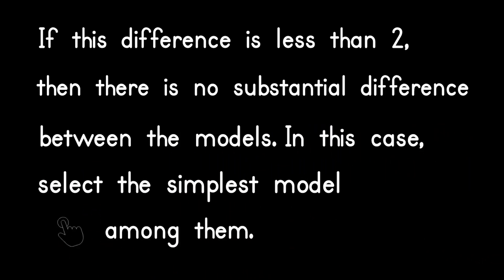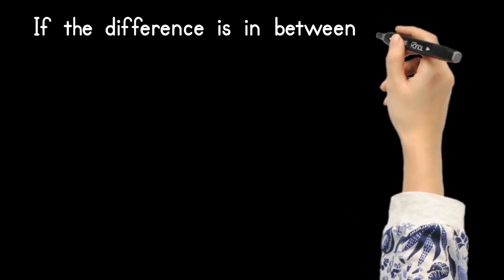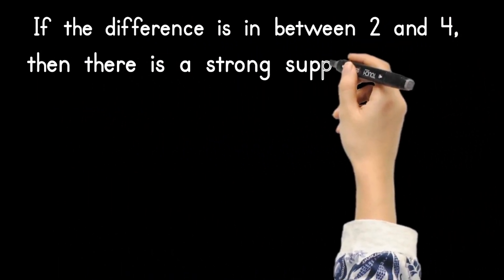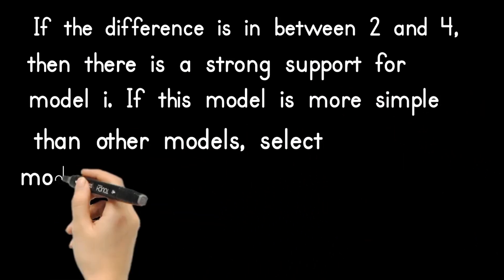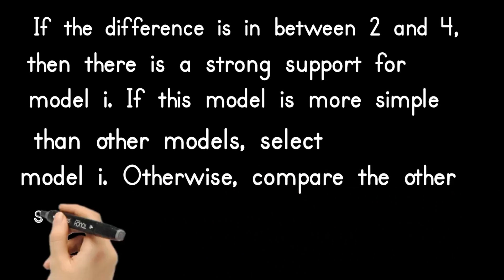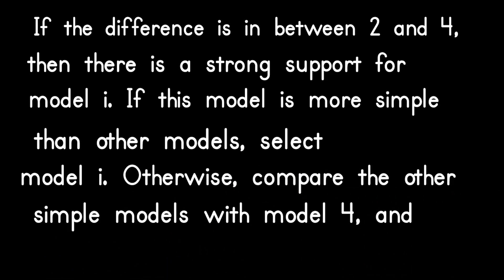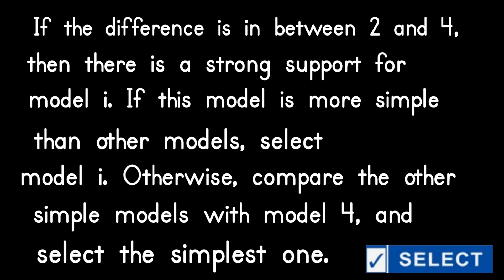If the difference is between 2 and 4, then there is strong support for model i. If this model is more simple than other models, select model i. Otherwise, compare the other models with model 4 and select the simplest one.